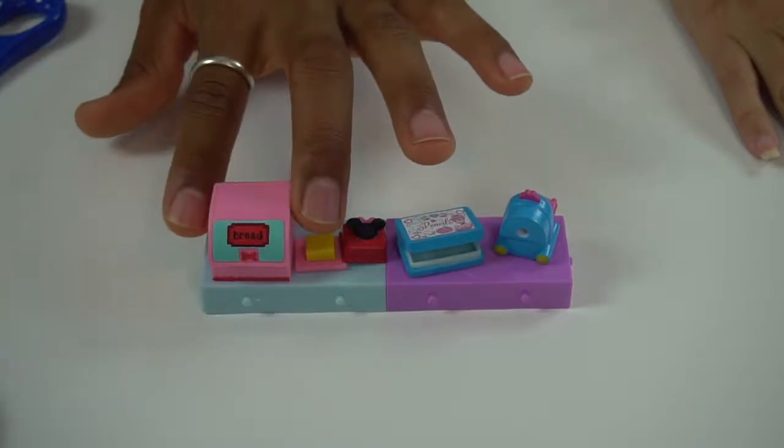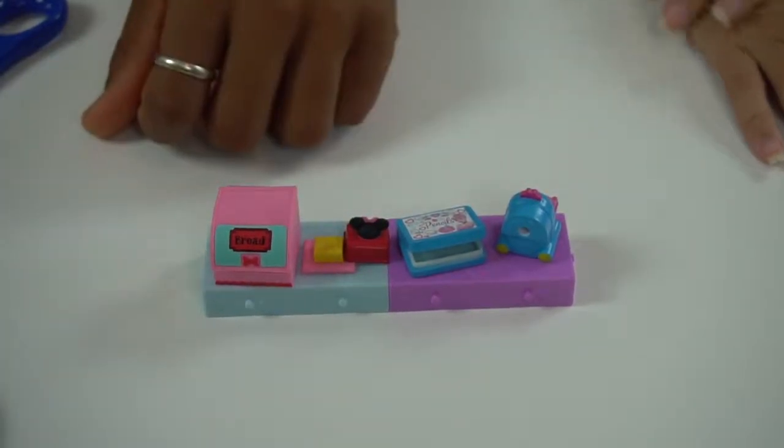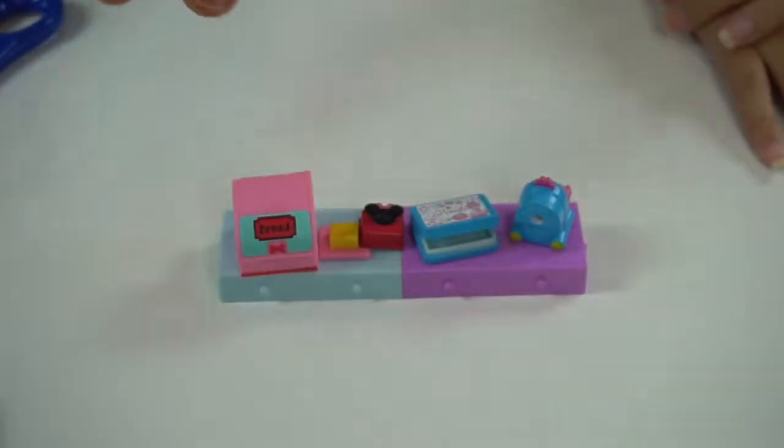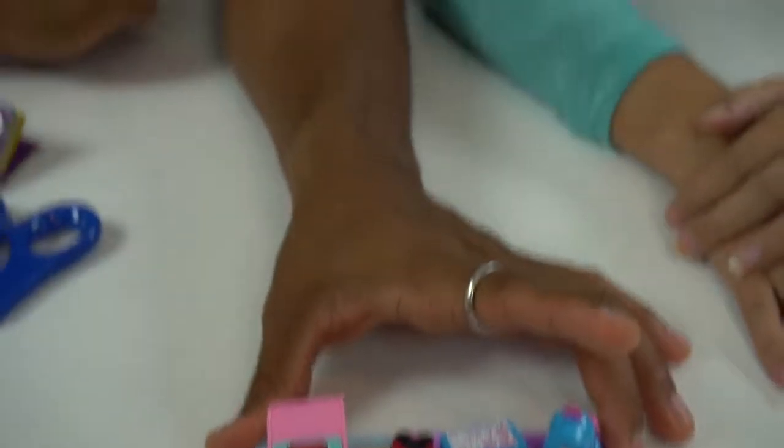There we go. So pencil, pencil case, pencil sharpener, butter, butter pan, bread basket or bread box, whatever you want to call it, with the bread inside. So I think these are pretty cool. What do you think about them? I really like them. I really love these ones, especially with the little Minnie heads on them.